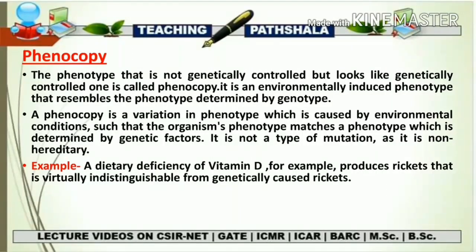The next topic of discussion is phenocopy. The phenotype that is not genetically controlled but looks like a genetically controlled one is called the phenocopy. It is an environmentally induced phenotype that resembles the phenotype determined by genotype. It is a phenomenon in which a particular phenotype in an organism appears to be genetically controlled, but that phenotype has actually been generated due to some environmental effect. Phenocopy is not a type of mutation because it is not heritable.